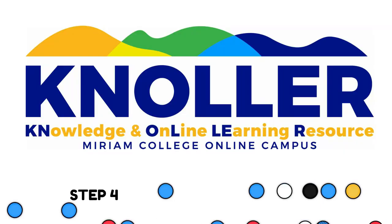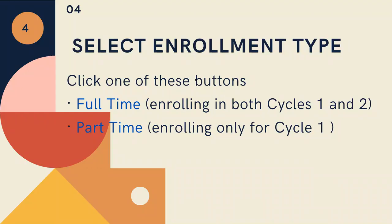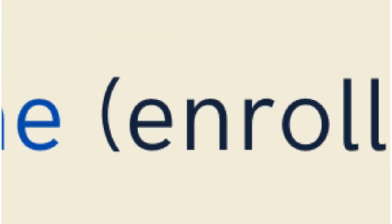Step 3: On the menu, click Registration. Step 4: During cycle 1 registration, you will be prompted to select your enrollment type. Click one of these buttons.